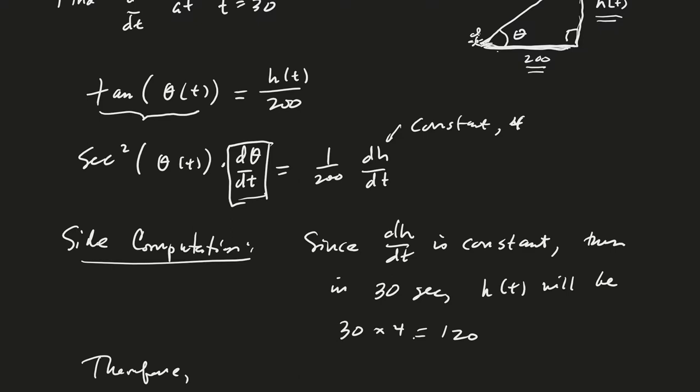And so therefore, at time 30, we'll have tangent of theta is equal to 120 over 200.